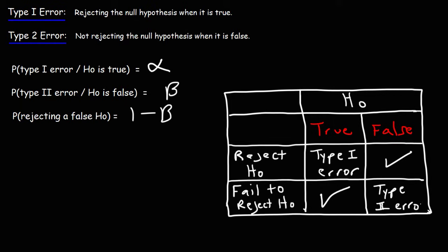Hopefully this table helps you see the difference between a type 1 error and a type 2 error. The type 1 error occurs when the null hypothesis is true and we make a bad decision — we reject it. The type 2 error occurs when the null hypothesis is false and we make a bad decision — we don't reject it.